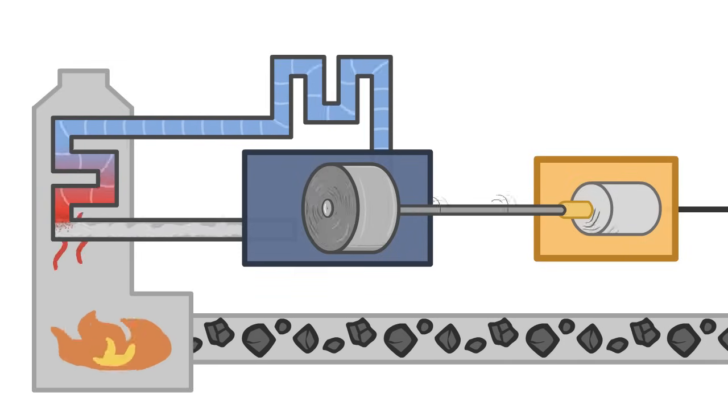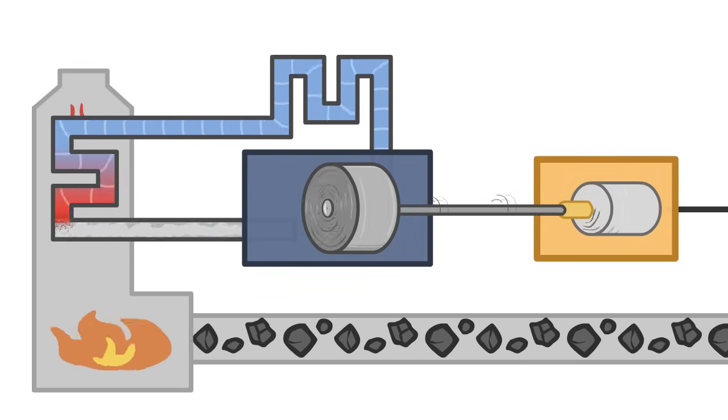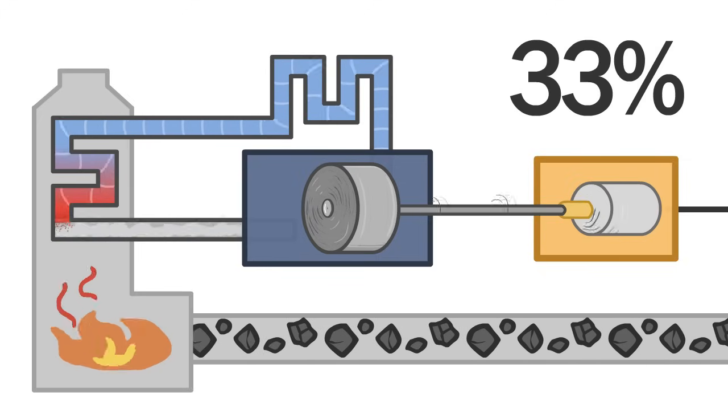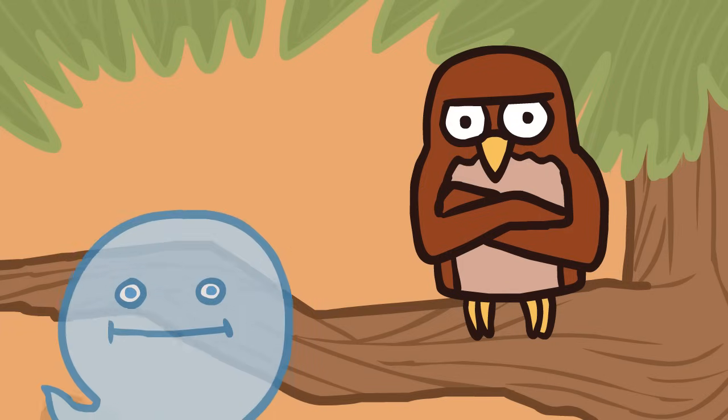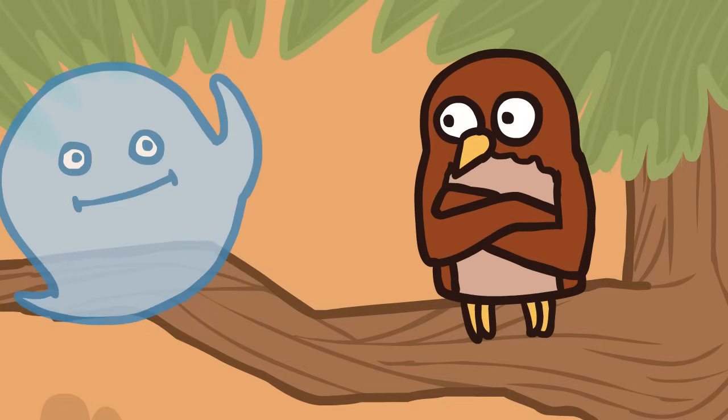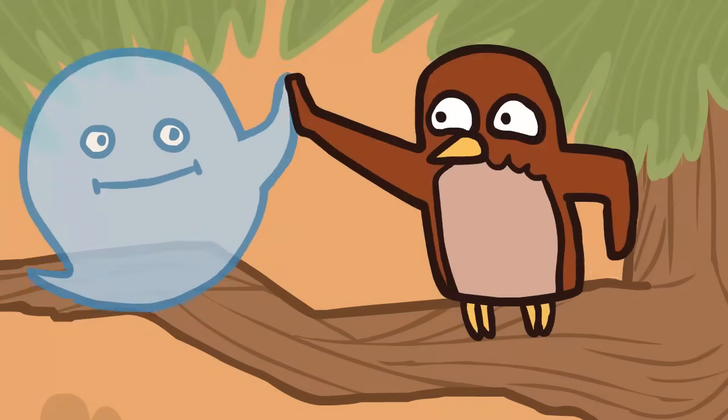In comparison, coal-fired steam turbines are only about 33% efficient. And this is one of the main reasons why gas-fired power plants are better for the environment.